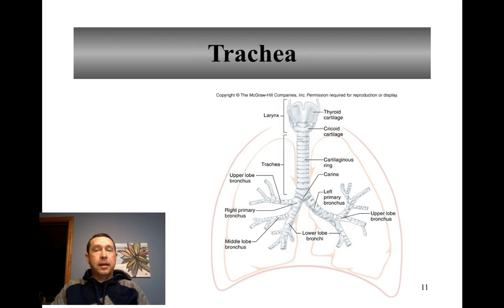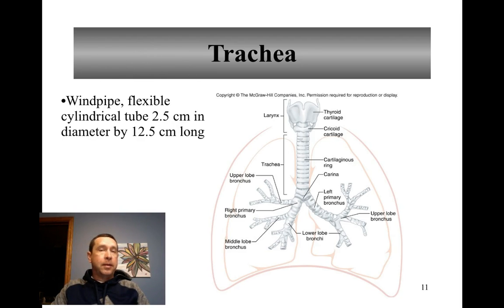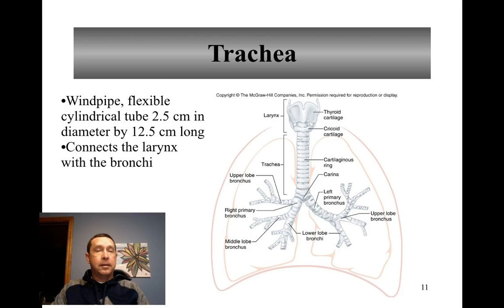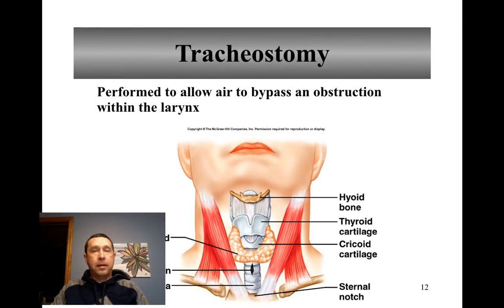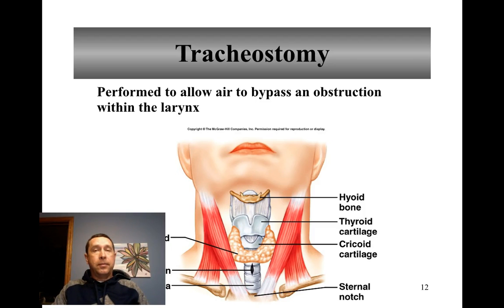The trachea is a pathway for air between the larynx and the bronchi. It's supported by several rings of hyaline cartilage, about 2.5 centimeters in diameter and about 12.5 centimeters long. Sometimes, if something is blocking the flow of air due to an obstruction in the larynx, a medical professional may perform a tracheostomy, which makes an incision in the neck and into the trachea.